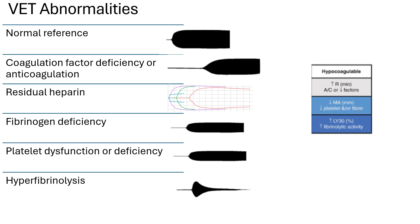The next two cases are cases of decreased clot strength — the max amplitude or MCF are low — due to either platelet dysfunction or deficiency, or fibrinogen deficiency. You can further elucidate if fibrinogen is the issue by looking at the K time or CFT time, which will often be prolonged, and the alpha angle, which will often be low. You can further evaluate with fibrinogen-specific testing such as CFF or FibTem. The last case shows hyperfibrinolysis — increased lysis after initial max amplitude has been achieved due to acute or chronic hyperfibrinolysis.